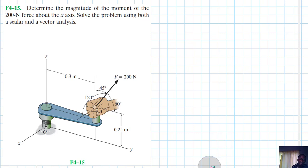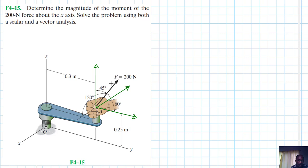Let's write down the components of these particular forces in all directions. We have this force here and the other force there, and another one in that direction. Because cos 120° is negative, I'll use this angle here: 180 minus 120 equals 60 degrees.